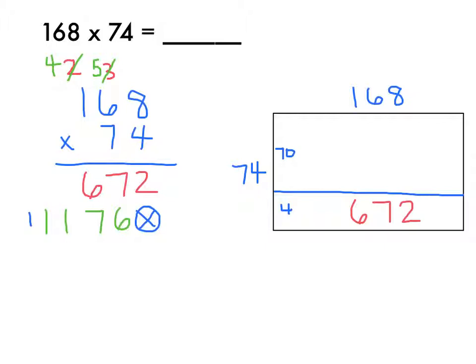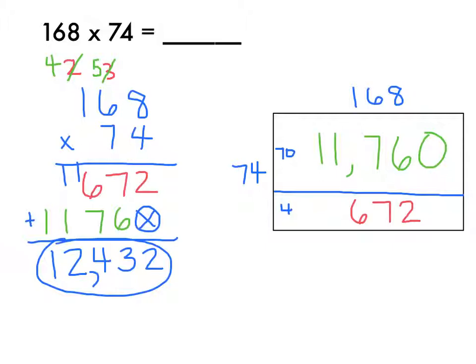Now I am ready to add those together. First, I'm going to go over here and make sure to fill in that this would be 11,760. And now I'm going to add 2 plus 0 is 2, 7 plus 6 is 13, 7 plus 6 is 13 plus 1 is 14, 1 plus 1 is 2, and 1 is 1, and I get 12,432.